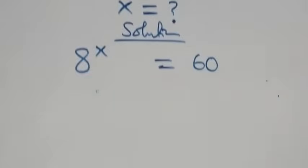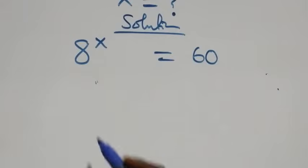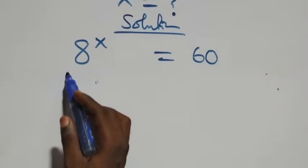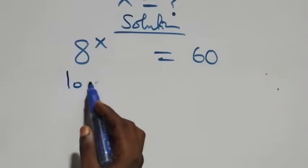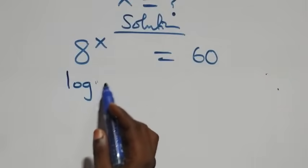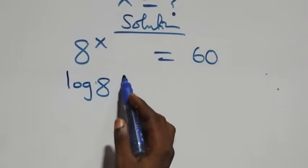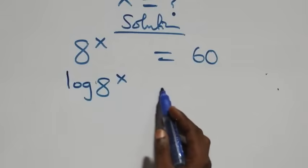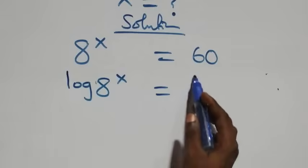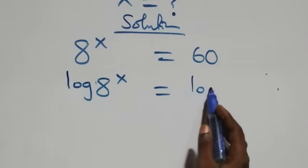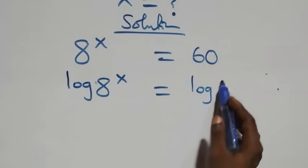We take the log on both sides, and this will give us log of eight raised to the power x equals log sixty.